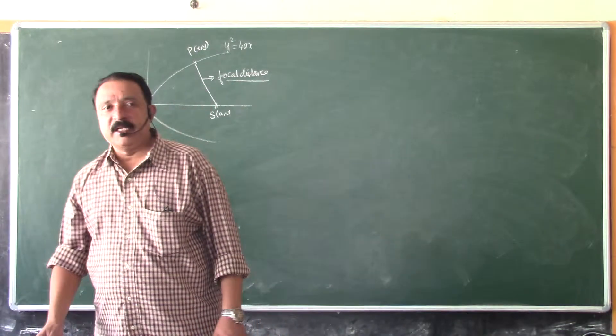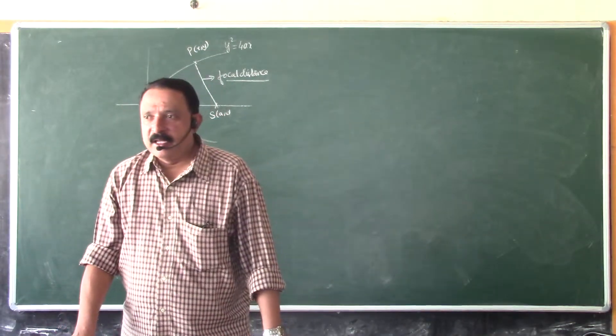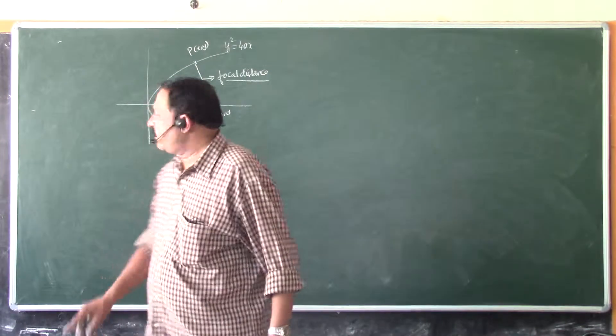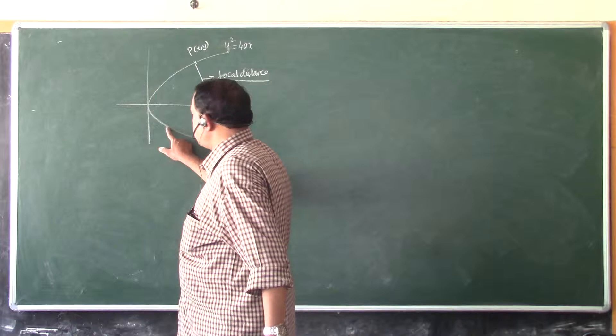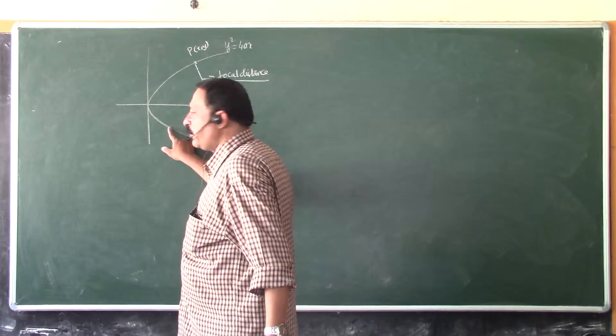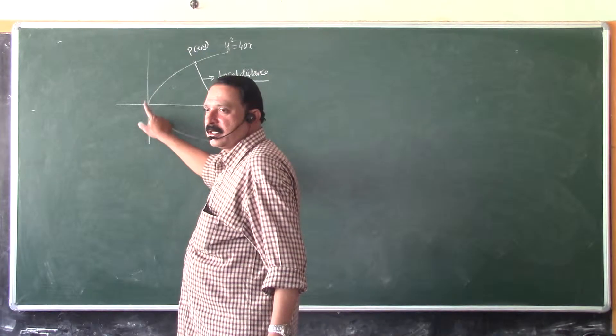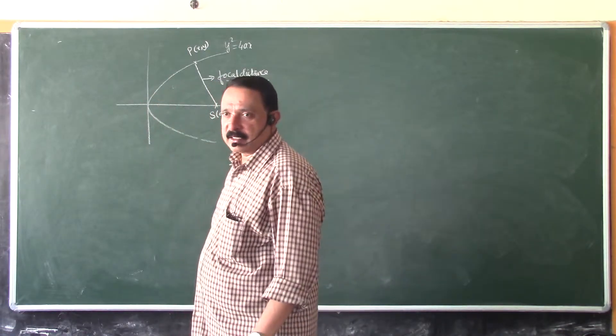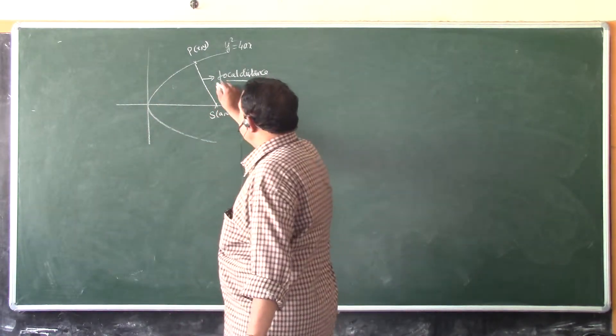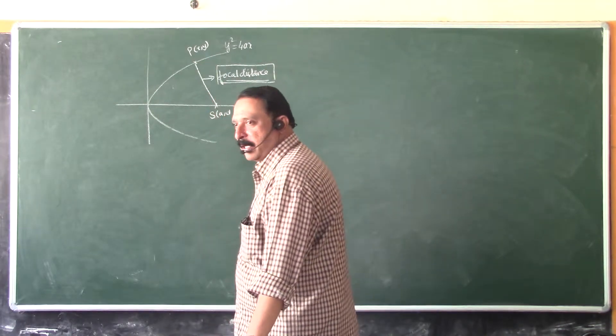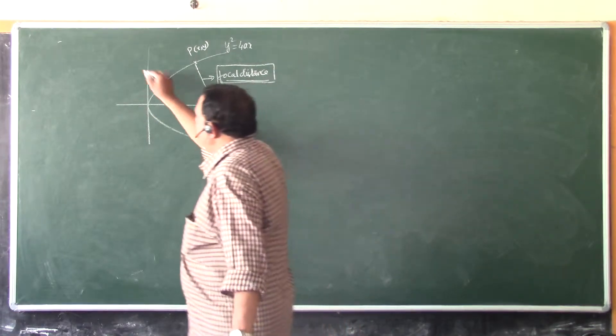What is the focal distance of a parabola? Distance between focus and any point. If I consider the point here then S is this, and this will become the focal distance of that point. So each point, different points will have different focal distances. So the definition of focal distance is the distance between focus and any point on the parabola. This is point number one.